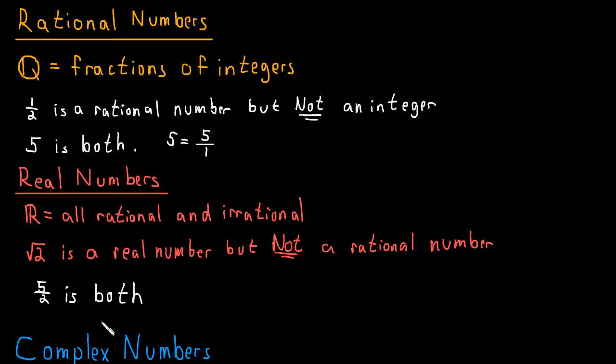So, for example, 5 halves is a fraction, so it's both a real number and a rational number. But the square root of 2 is only a real number. We'll talk more about the real numbers at the end of the video, but they're really, really, really important. They're the numbers we'll be using most often in this course.